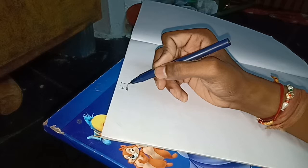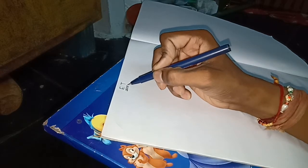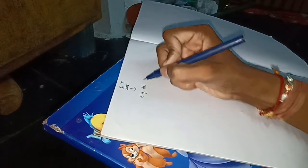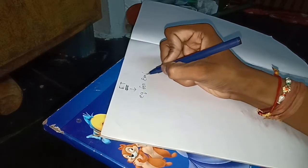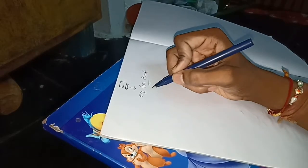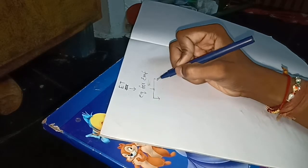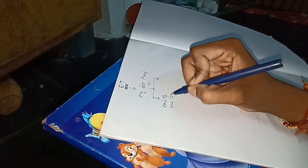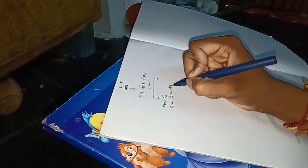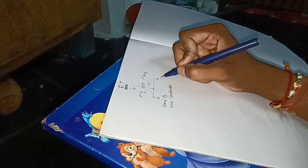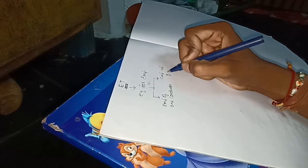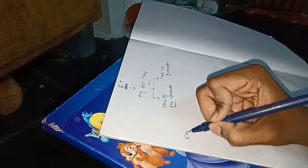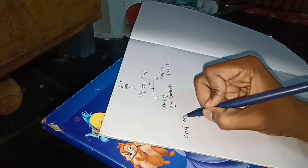We are going to discuss the main topic in electrical technology: the equation for induced EMF. In induced EMF, we have two types — the induced EMF of one conductor, and the induced EMF of a generator. First, I will discuss the EMF of one conductor.